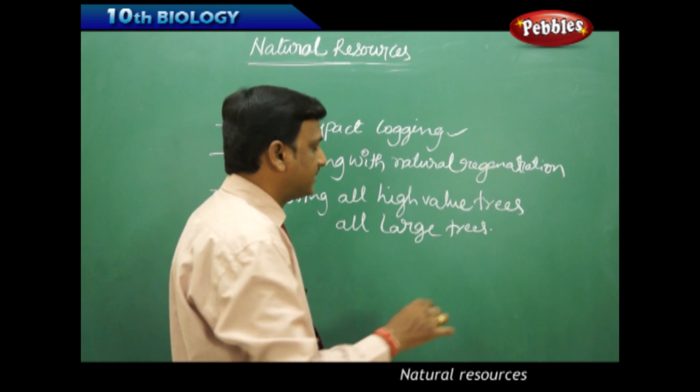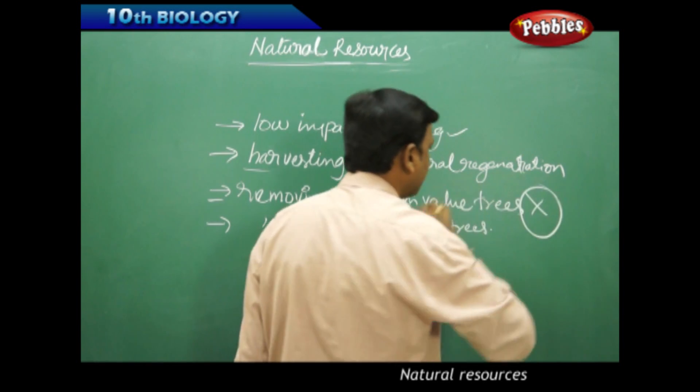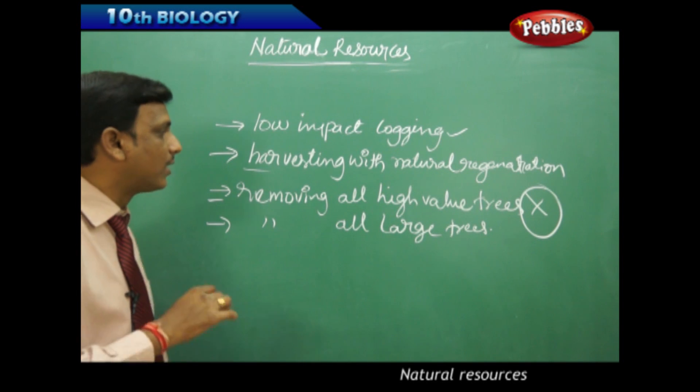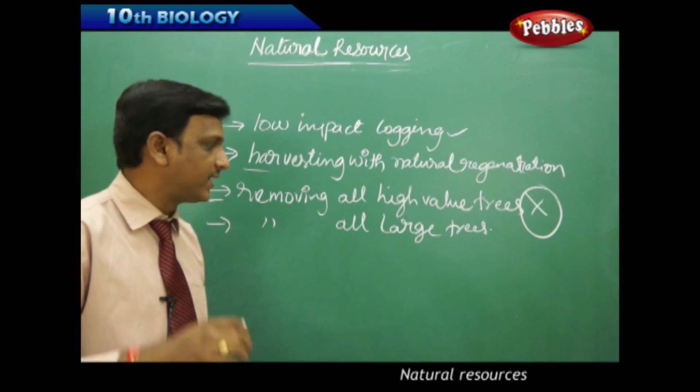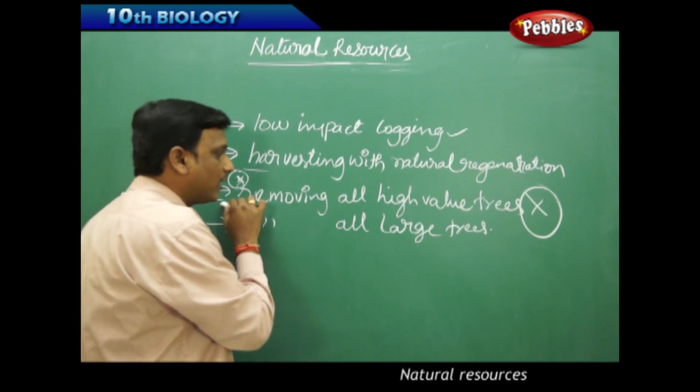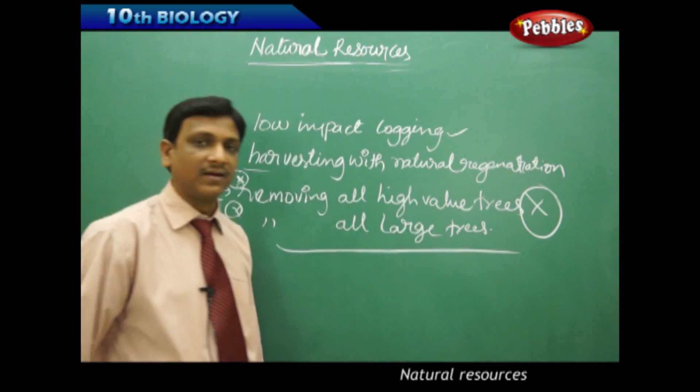Third, removing all high value trees should be condemned, avoided. It is a wrong thing. Removing all high value trees is a wrong practice and should be avoided. The other practice, removing all the large trees, that also should be avoided.